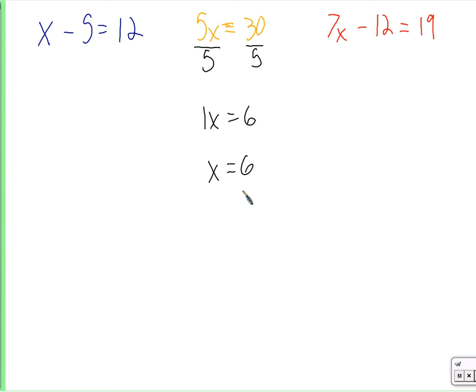I know it seems silly to show your work on that, but when it's part of a more complicated equation we want to be prepared for that — to use that tool to solve the equation. It's not always obvious, especially if you have 5x equals 73. It's not obvious what x is, but we wouldn't have too much trouble figuring it out if we divide both sides by 5. Whatever 73 divided by 5 is, that must be what x is.